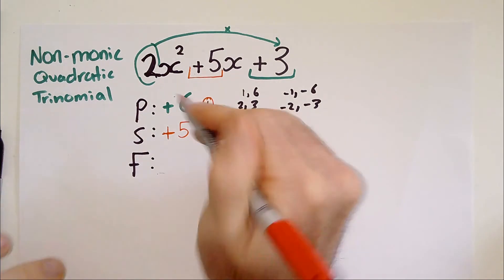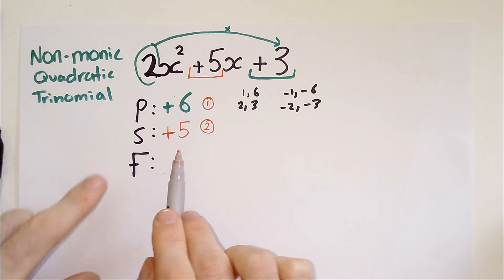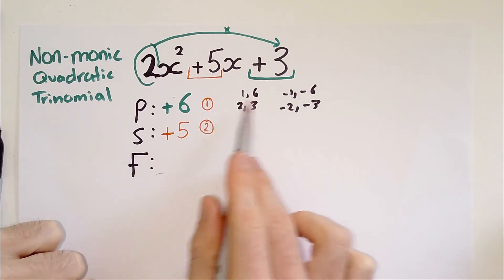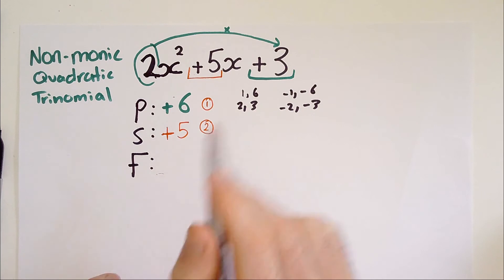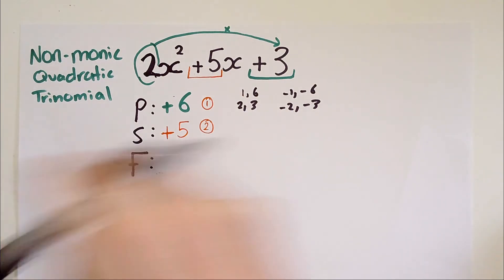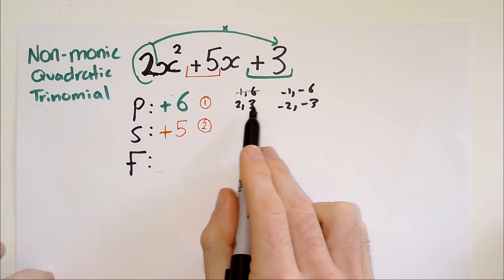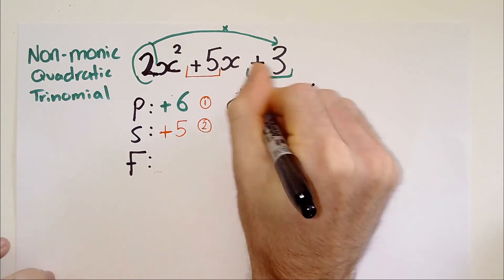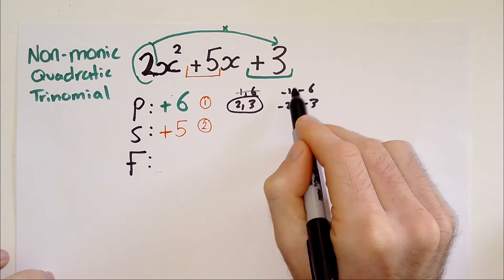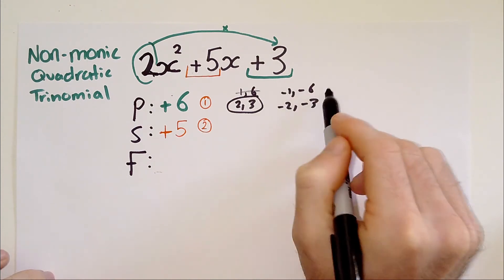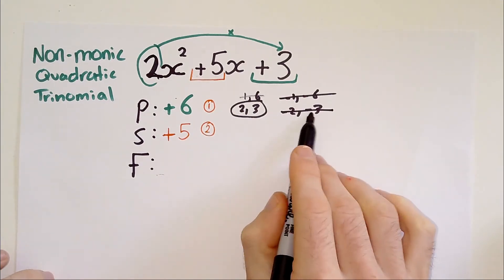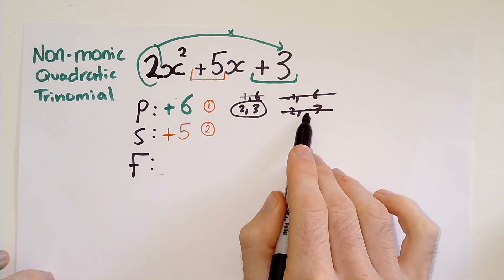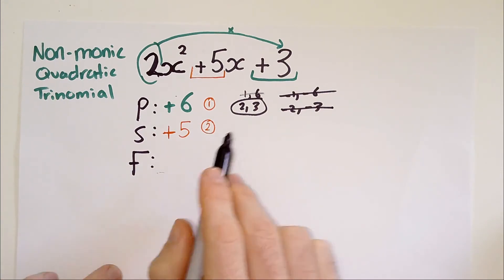We're going to narrow it down to one by considering the S. We look at these combinations and ask which two numbers add to plus five. One plus six is seven, so it is not that combination. Two plus three equals positive five. We have our winner. Minus one plus minus six equals minus seven, that won't work. And minus two minus three equals minus five, that won't work. So two and three are our winners.